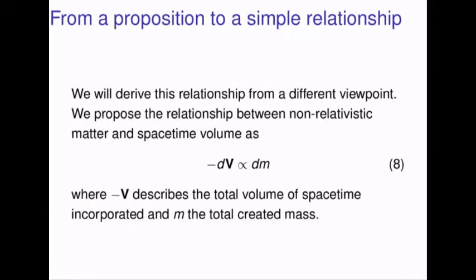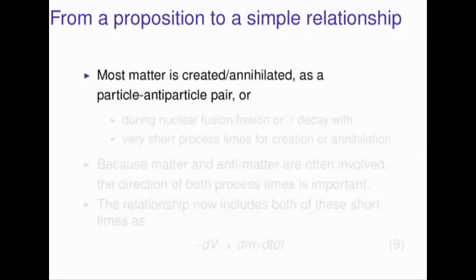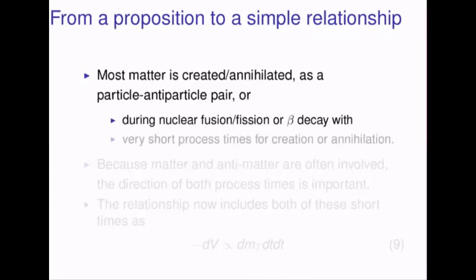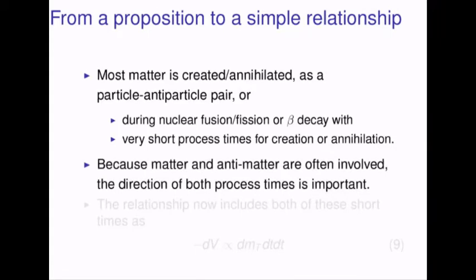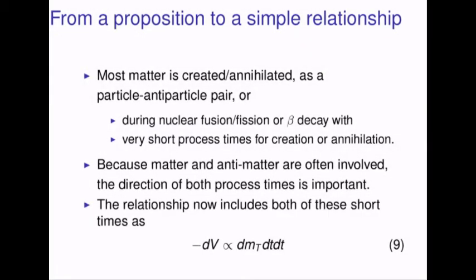We will derive this relationship from a different viewpoint. We propose the relationship between non-relativistic matter and spacetime volume as in equation eight, where minus V describes the total volume of spacetime incorporated into matter, and m is the total created mass. Most matter is created or annihilated as particle-antiparticle pairs, or during nuclear fusion, fission, or beta decay, with very short process times for creation or annihilation. Because matter and antimatter are often involved, the direction of both process times is important. The relationship now includes both of these short times, as in equation nine.